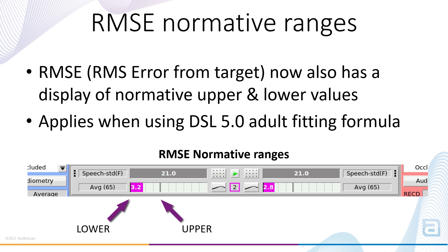Again, these show up as upper and lower limits indicated by thin black lines. Note that while SII is typically better with larger numbers, RMSE results are more favorable when the value decreases. In this example you'll note that the lower limit shows up right at the zero line.